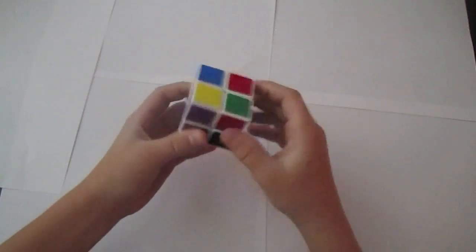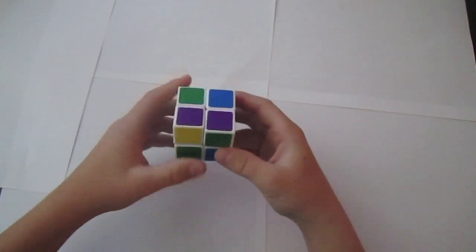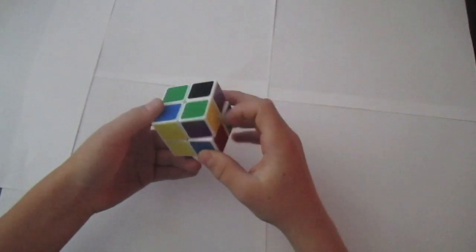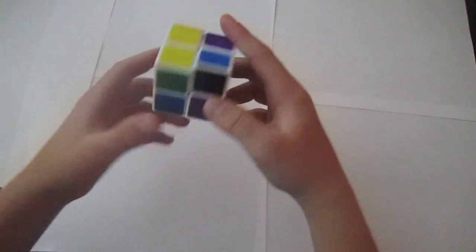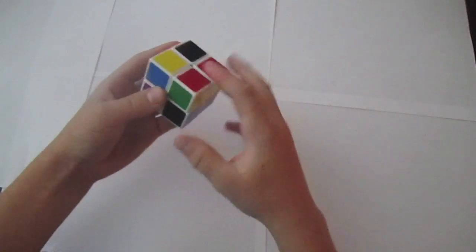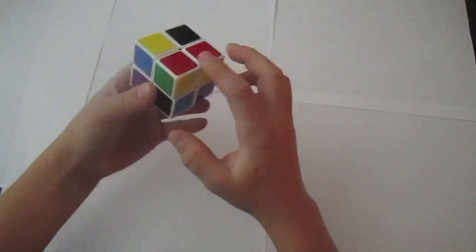First, I'll scramble it up. You have to have some basic 3x3 knowledge to learn how to solve this. It's all scrambled up. The first step is to solve the yellow side. Try to solve this yellow side, but you also have to get the layer.